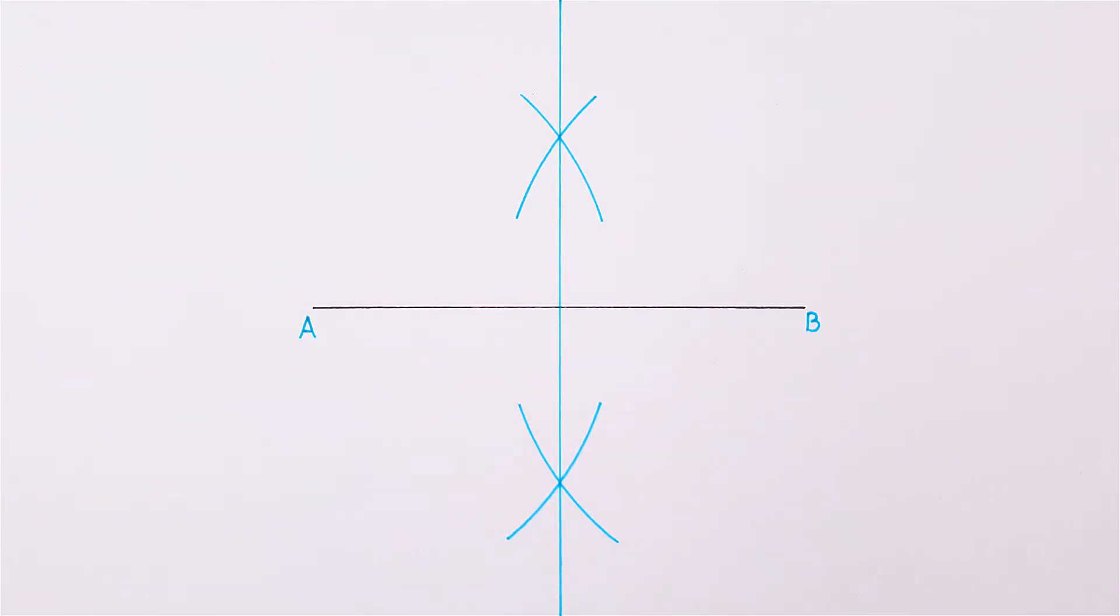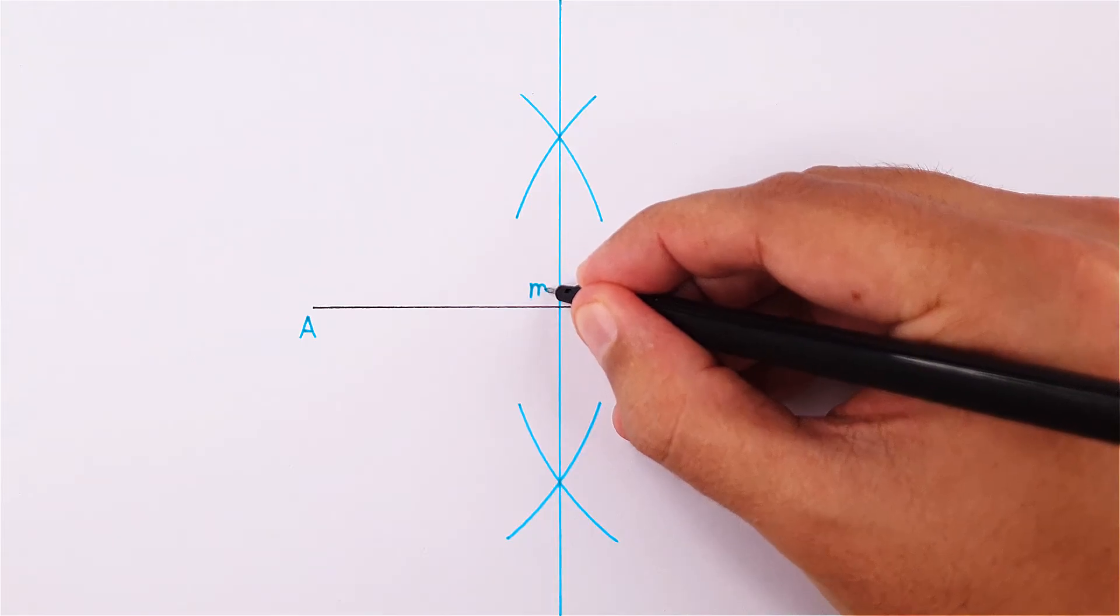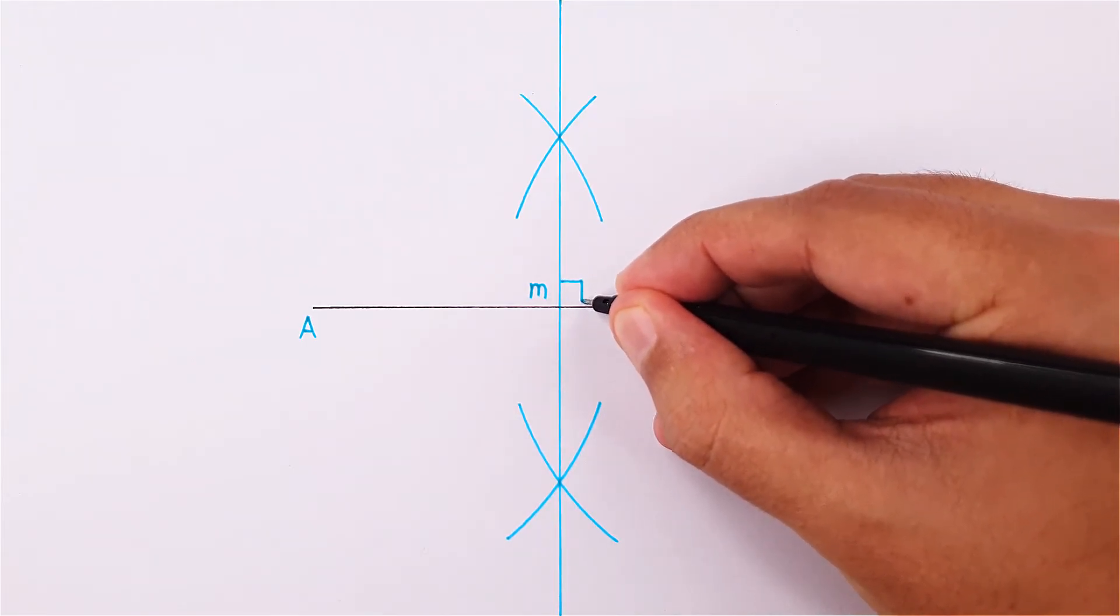Where this line intersects line AB will be the midpoint, and you can also note that it will be perpendicular, in other words 90 degrees.